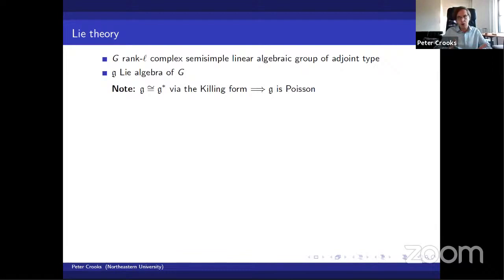This is going to render the Lie algebra G a Poisson variety. Now there are many things one can say about this Poisson structure on the Lie algebra. I'd like to say something that is perhaps not emphasized a great deal, but that is going to feature very prominently in this talk.